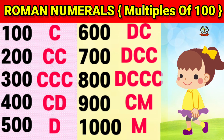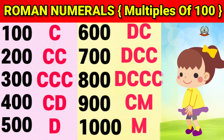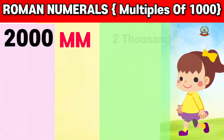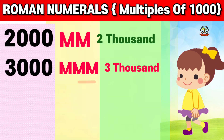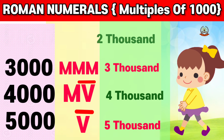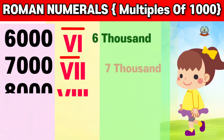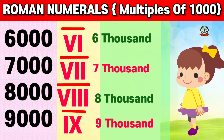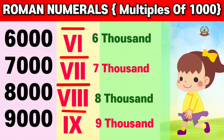Superb! Next we learn Roman Numeral multiples of thousands. 2,000, 3,000, 4,000, 5,000, 6,000, 7,000, 8,000, 9,000. That's good.